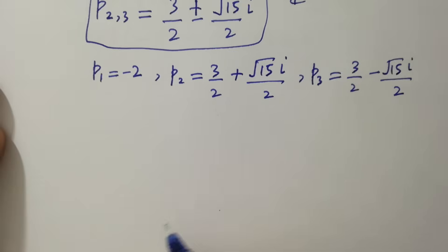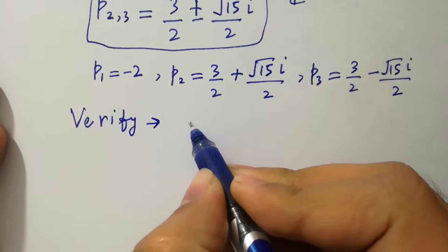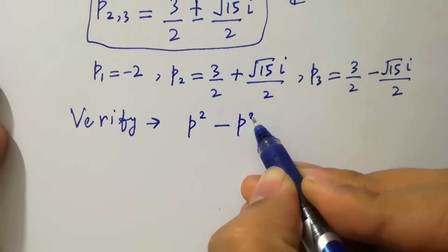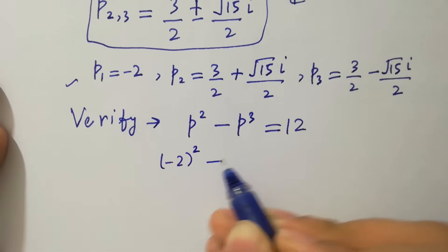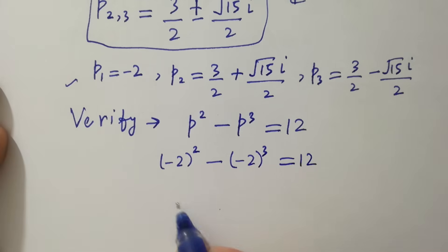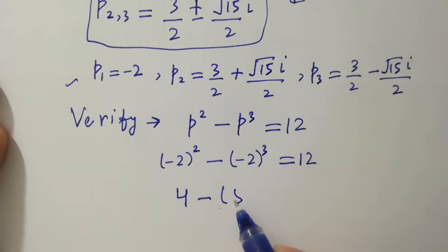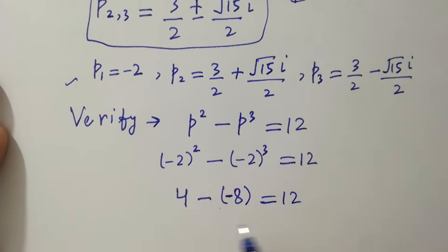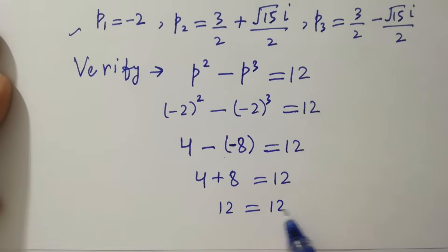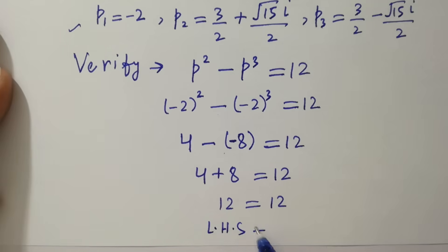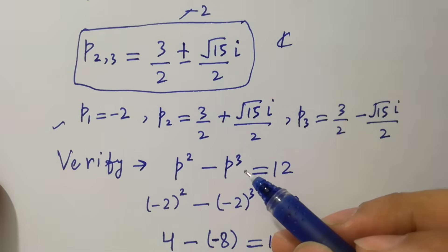Here we have three values of p. To verify, substitute p₁ equals minus 2 into the original equation p squared minus p cubed equals 12: (minus 2) squared minus (minus 2) cubed equals 4 minus (minus 8) equals 4 plus 8 equals 12. Left-hand side equals right-hand side, which confirms that the value of p satisfies the equation.